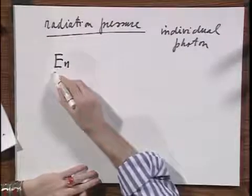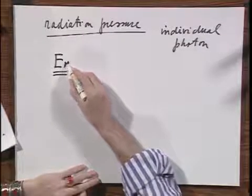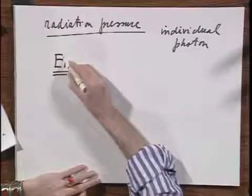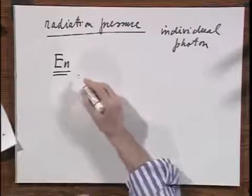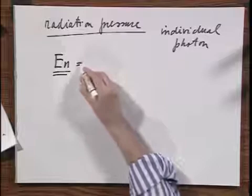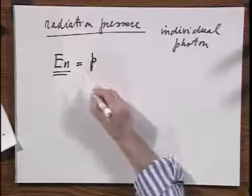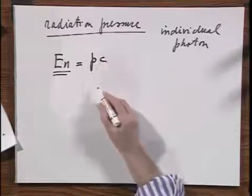And I write down for the photon energy E_n, because I don't want to write an E because that may confuse you with energy. And that, according to Einstein, is the momentum that the photon carries times the speed of light.